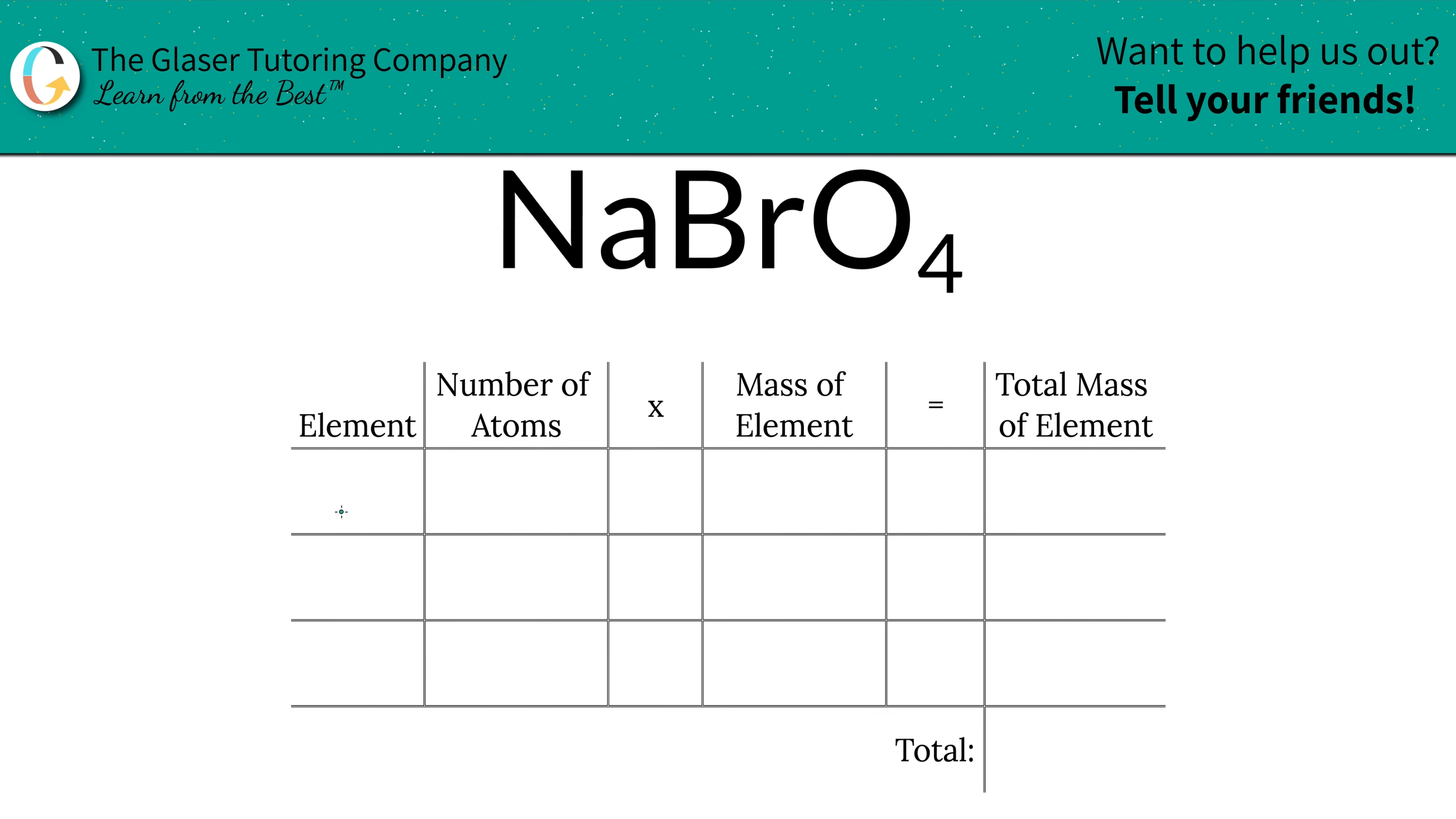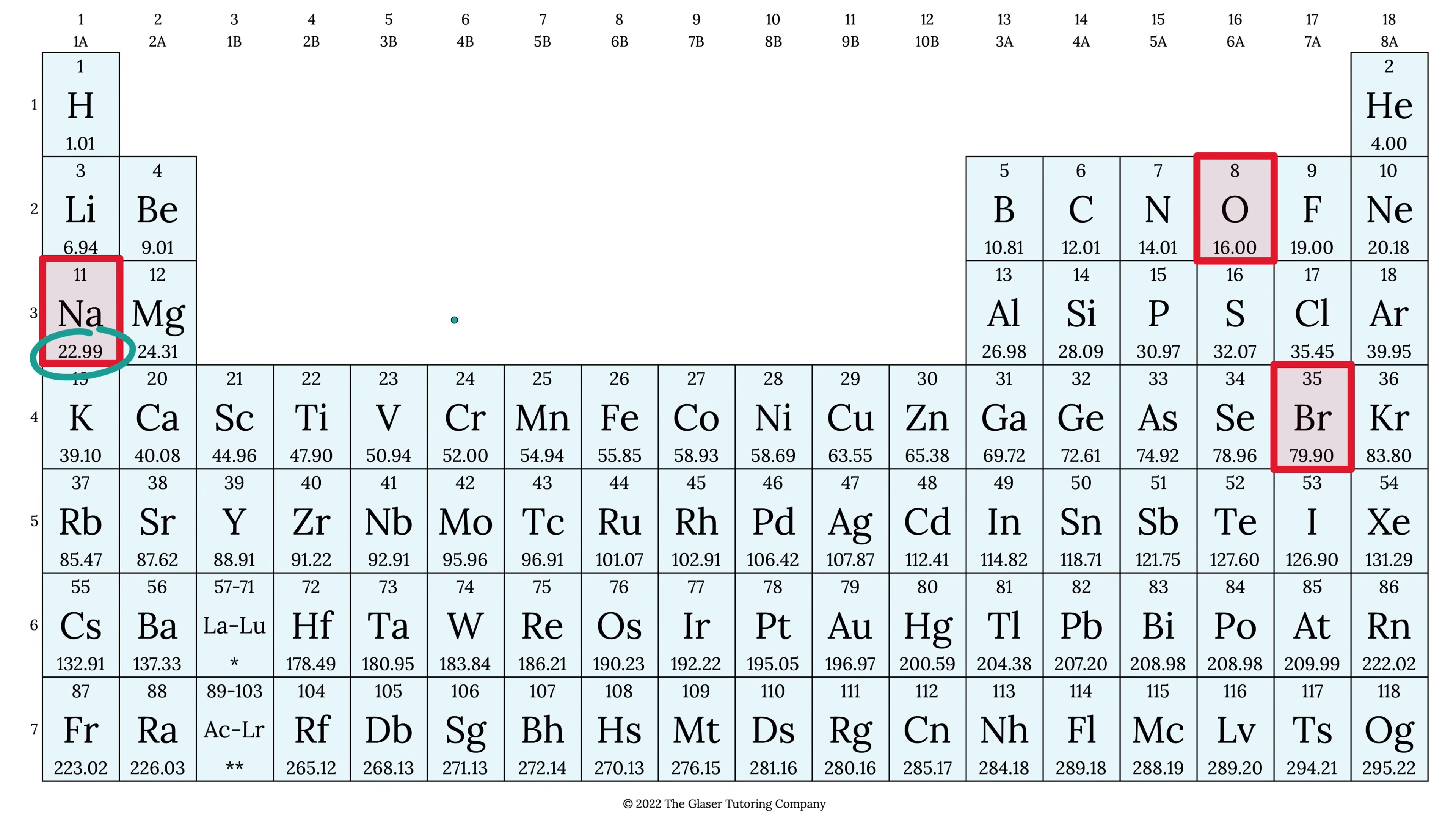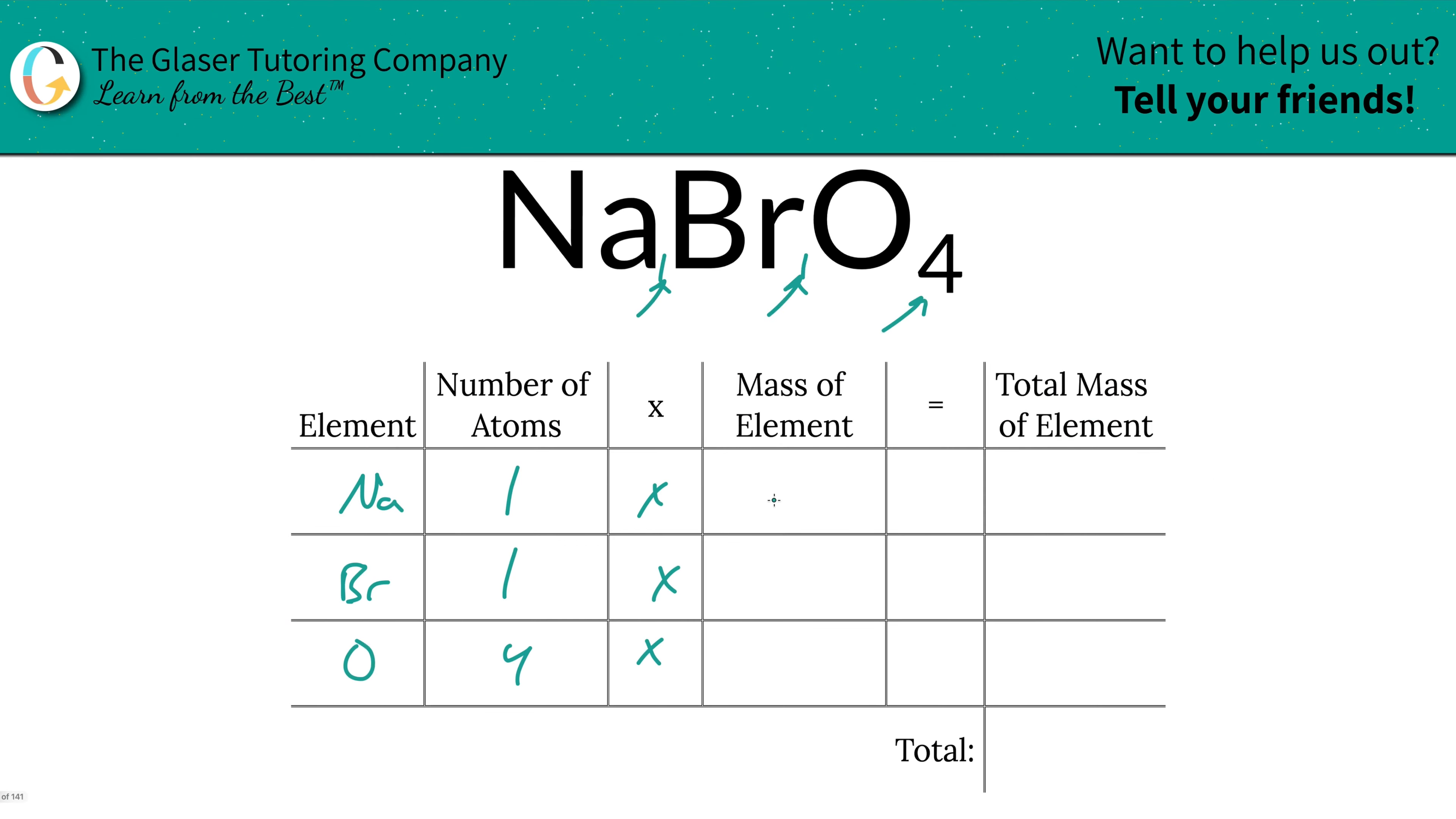So the first step is to write the elements we see. Then write down the number of atoms, and that's where the subscripts come into play. If you don't see a subscript, just put in a one there. So we've got one sodium, one bromine, and then we have four oxygens. Then we're simply going to take those number of atoms and multiply it by the mass of each particular element, and those masses are found on the periodic table. Sodium's mass is 22.99, oxygen is 16, and bromine is 79.90. So let's write that in: 22.99, bromine was 79.90, and oxygen was 16.